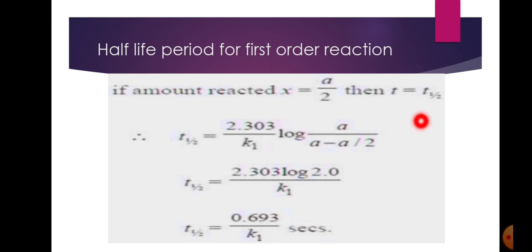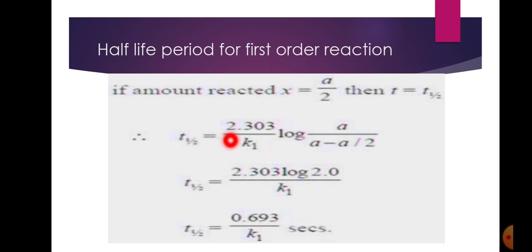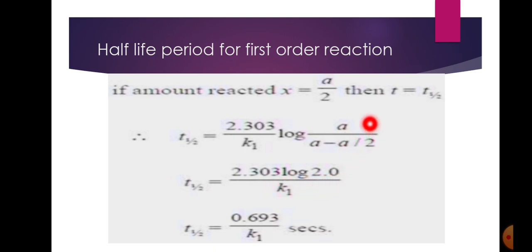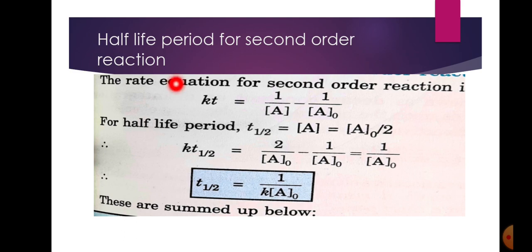जब T½ पर concentration initial concentration से आधी हो जाती है, तो formula में value रखने पर: T½ = 2.303/k₁ × log(a / (a - a/2)), जो simplify होकर T½ = 2.303/k₁ × log 2 = 0.693/k₁ आता है। यह seconds में आती है क्योंकि time लिया हुआ है।